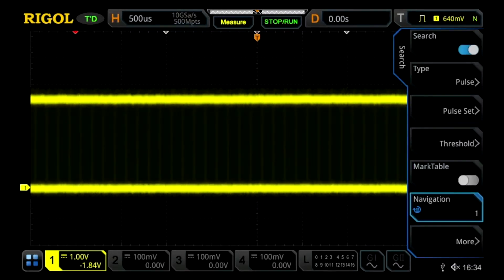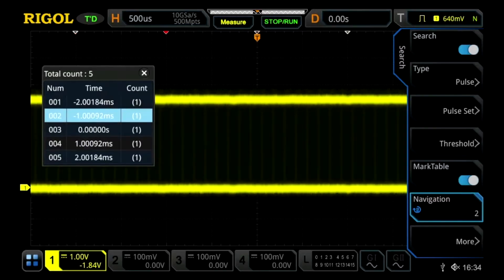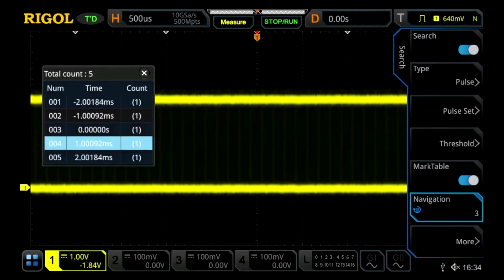Now we can add the marker table. We can see this table that allows us to look at in time how each of the signal points that are the search events are located.